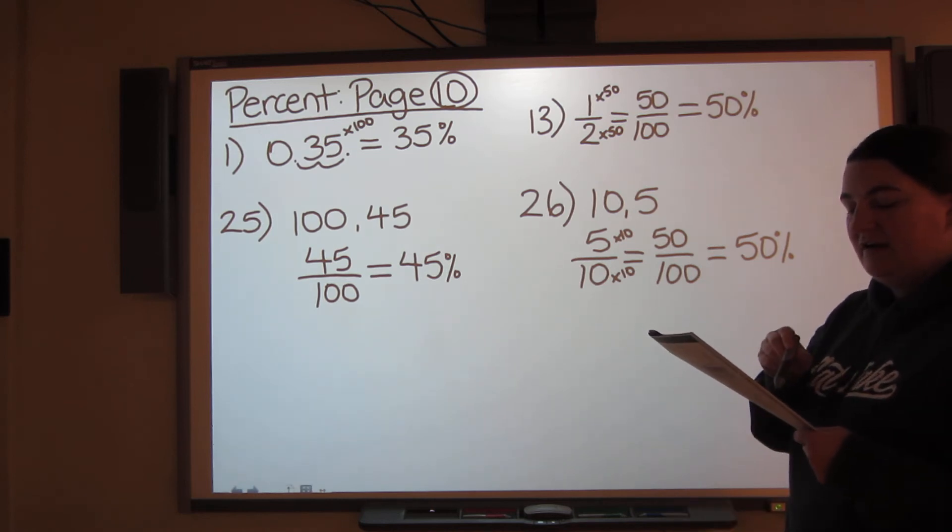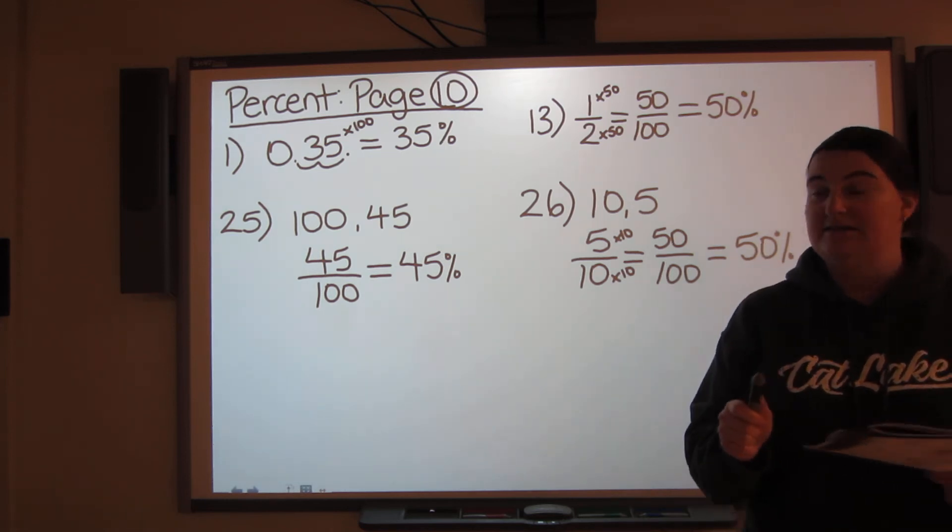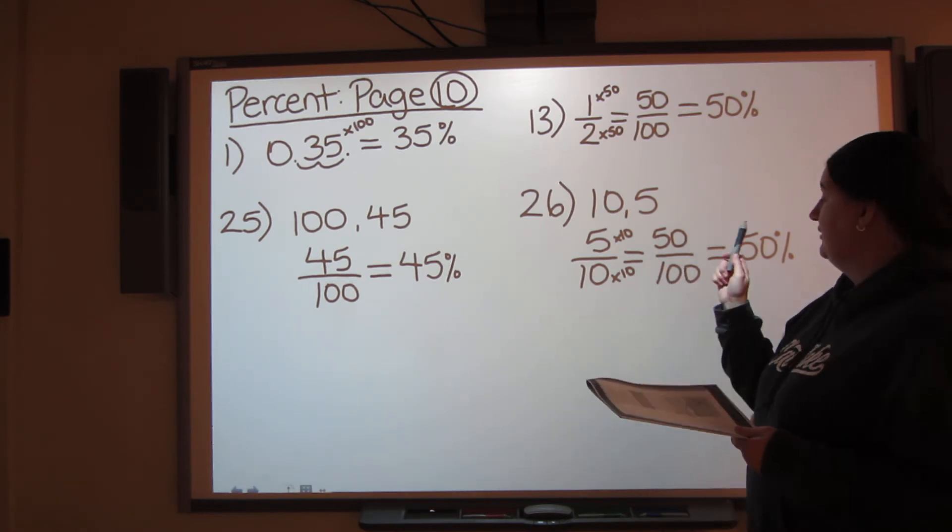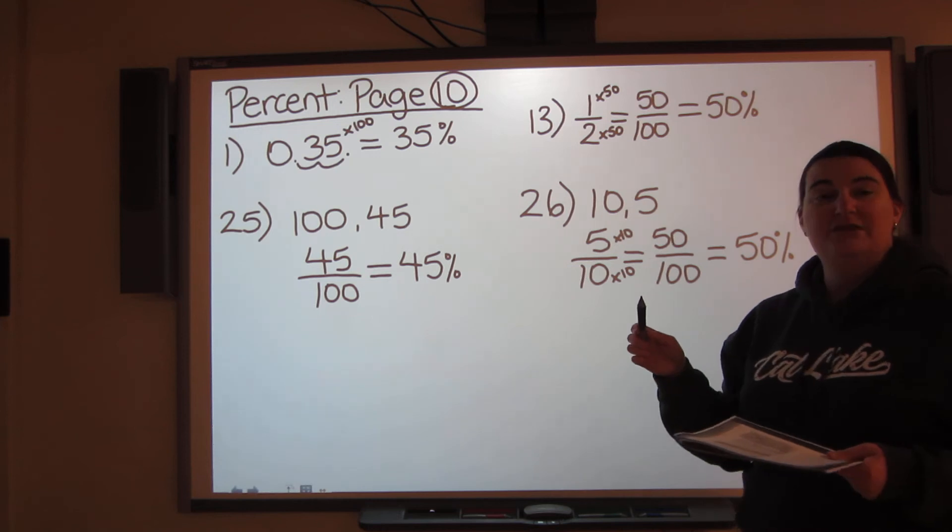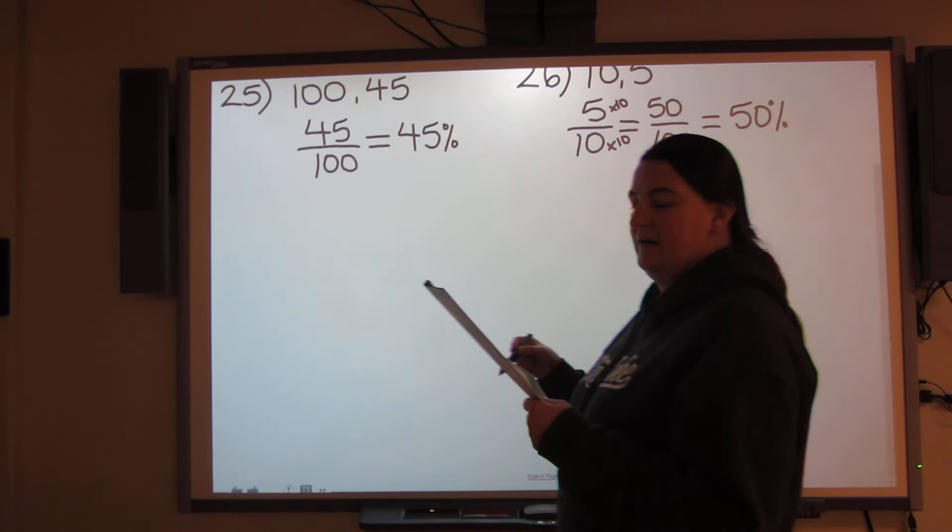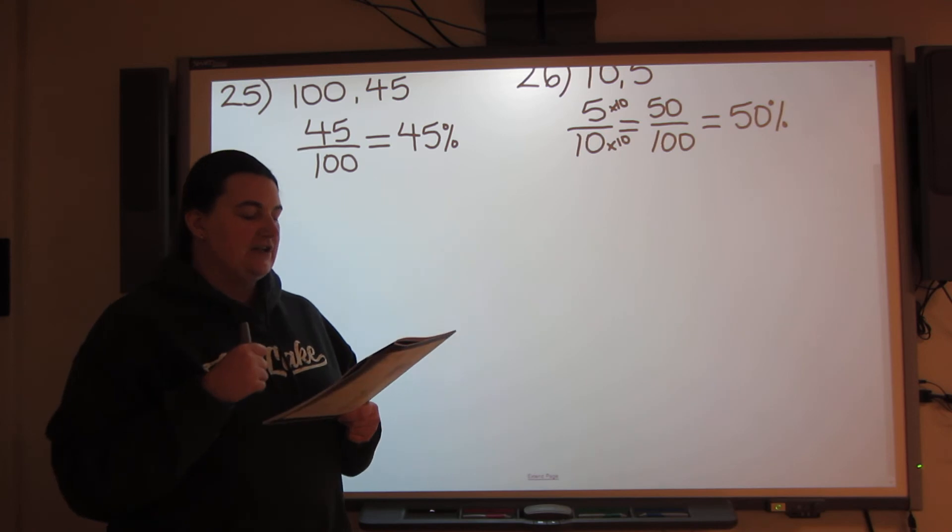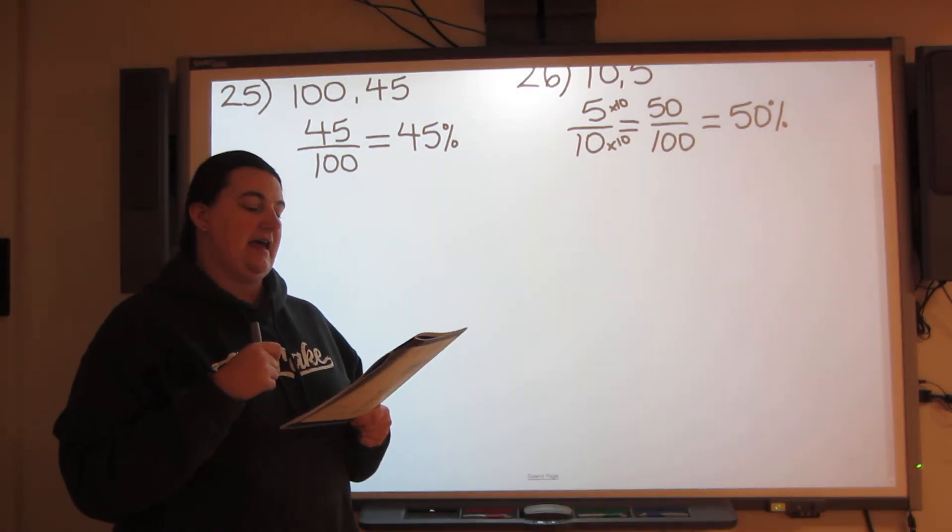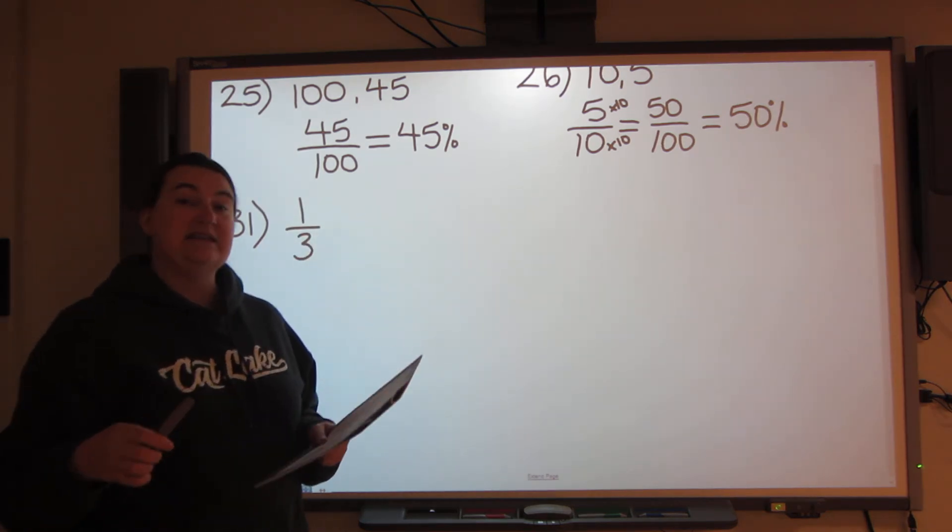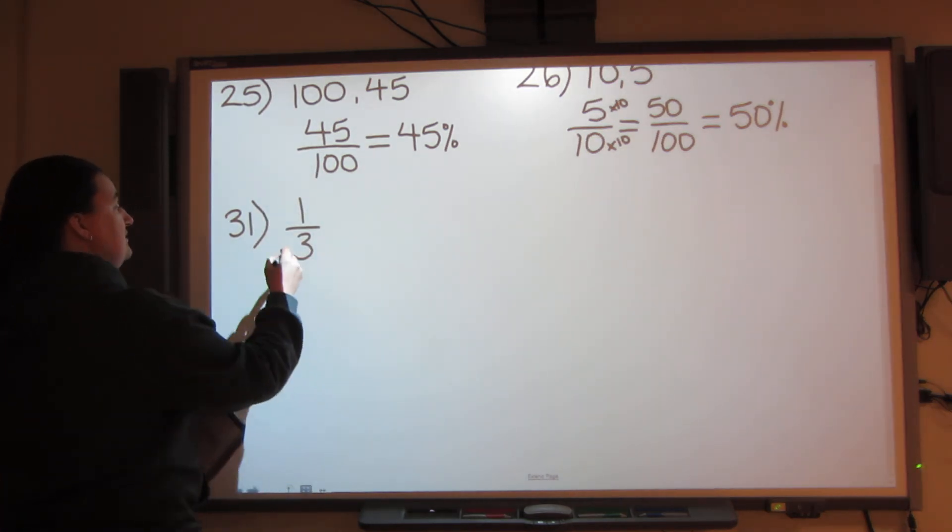Now, I want you to take a look at number 31. 31 all the way to 39 are different and that is because they do not have denominators that are easily changed to 100. So this is where we're going to have to use division. So take a look. Number 31. So it says express each fraction as a percent to the nearest tenth. So remember, when you have a denominator and you cannot easily change that denominator to 100, you need to divide.